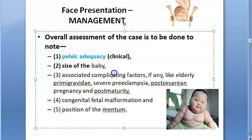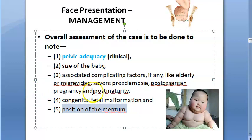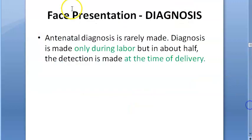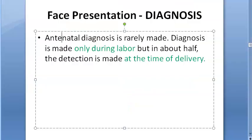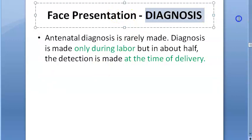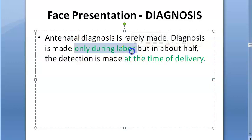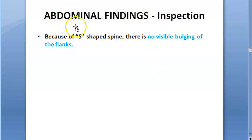For management, you'll have to assess the adequacy of the pelvis, size of the baby, any associated complicating factors, and any fetal malformation like anencephaly. You should know the position of the mentum - whether it's anterior or posterior. If it's anterior, that's still manageable for the mother with some morbidities. You will usually see this at the time of delivery.